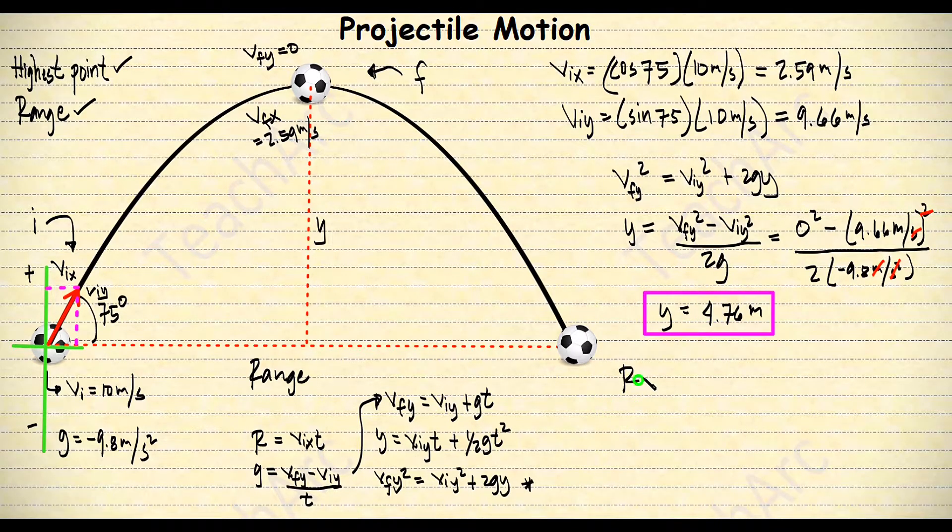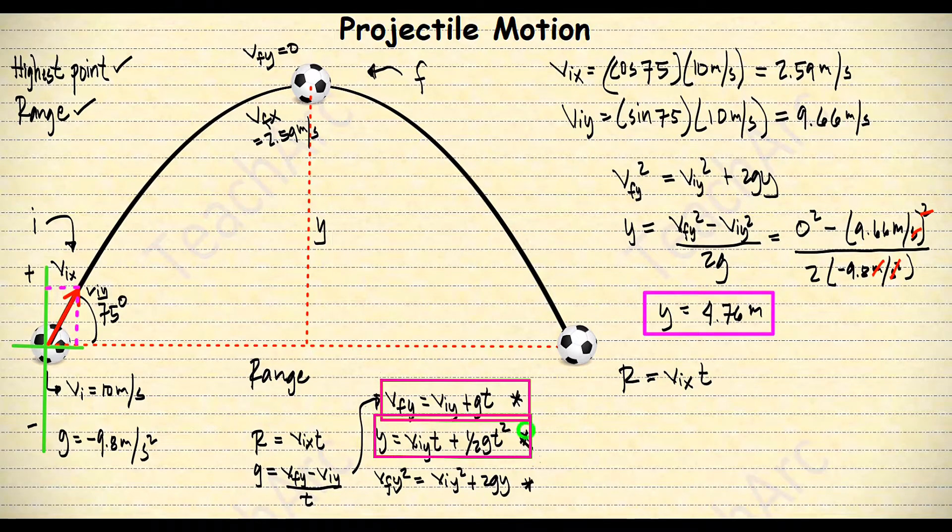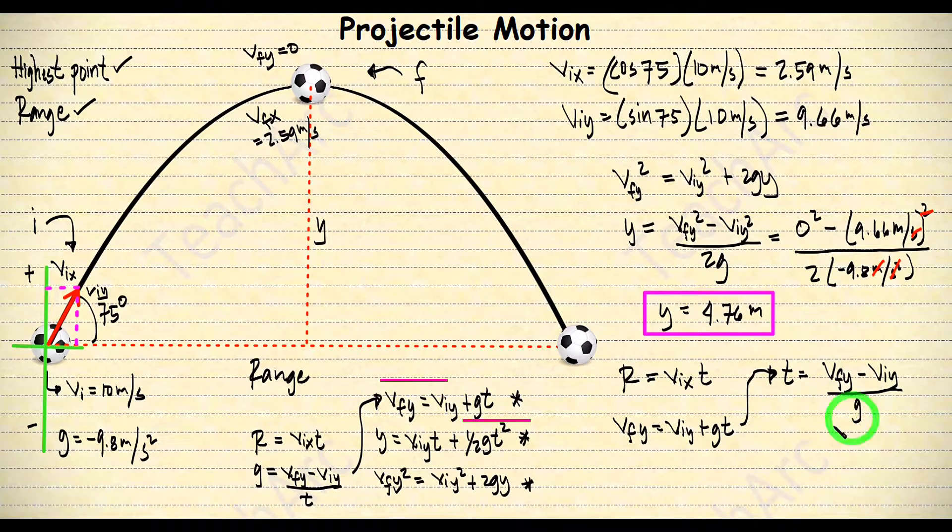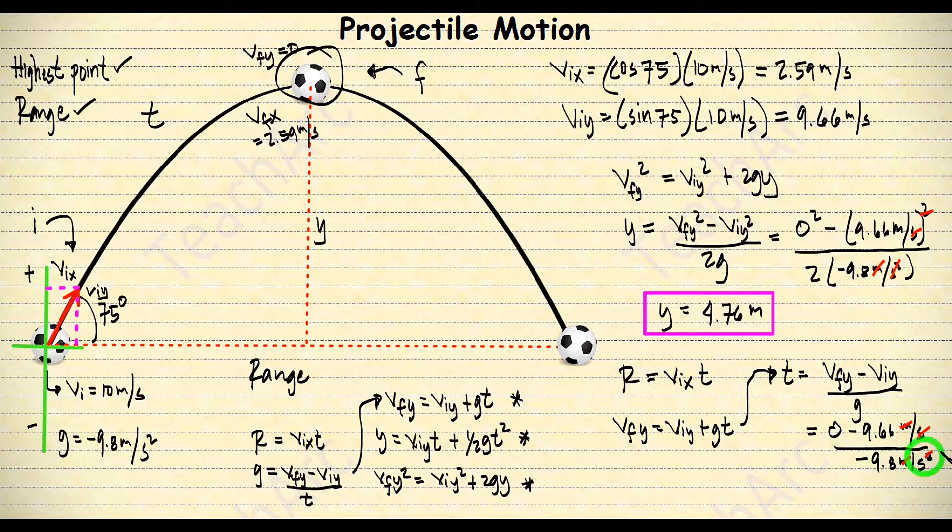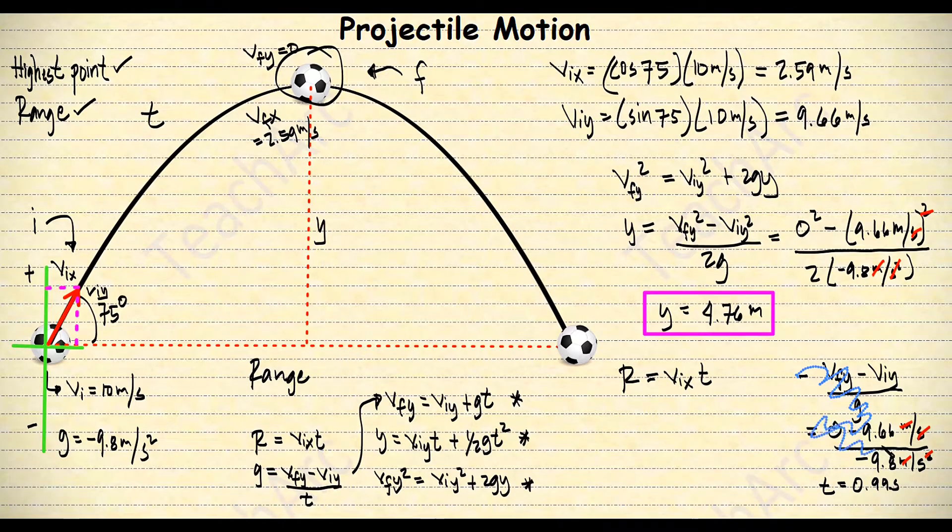Now, for the range, this is the formula. But we need the total time. These two formulas here can give us the time. I will use the first formula. The time that I will get using this formula will only be from the starting point until the maximum height. But multiplying it by 2 will give us the entire time of the motion. So our total time here is 1.98 seconds.